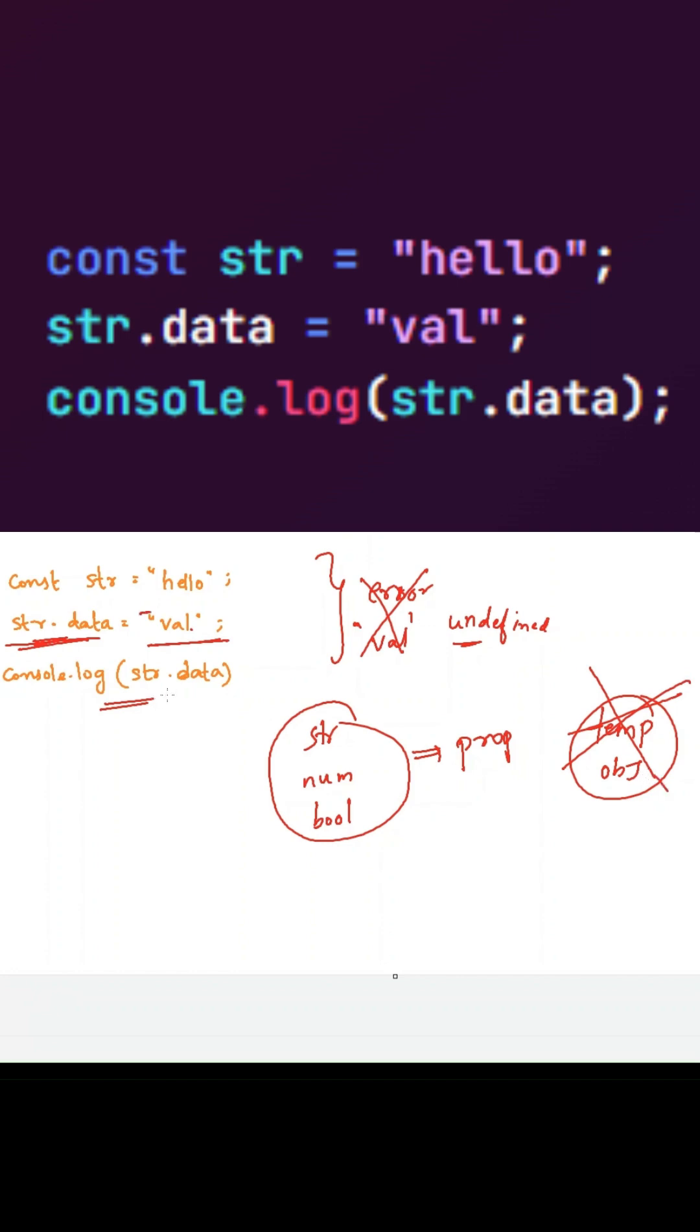In the last line, when you're trying to access this property from the primitive data type, it will create another temporary object. This temporary object does not have any property called 'data'. Due to this, it will return undefined to the console.